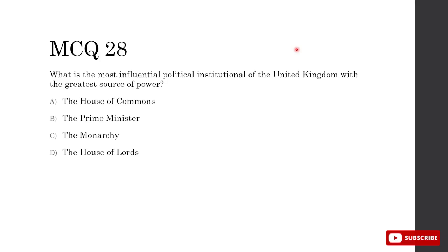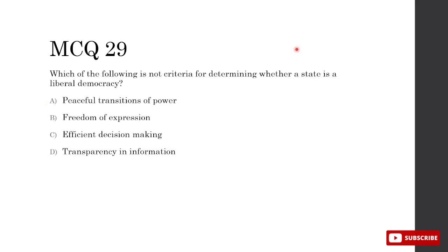What is the most influential political institution of the UK with the greatest source of power? The legislative branch has the most power. The monarchy has no real power, and the prime minister's power is derived from the House of Commons that appoints them. Since the House of Commons appoints the prime minister, it's the most effective and influential institution. The House of Lords can only delay legislation — it can't pass or veto laws — so it has less power. The answer is the House of Commons. For liberal democracy criteria: efficient decision-making is not a criterion.